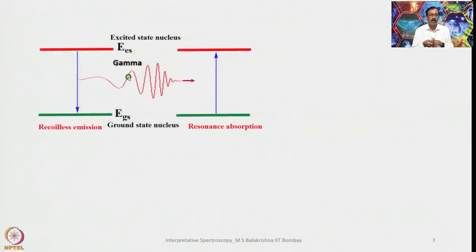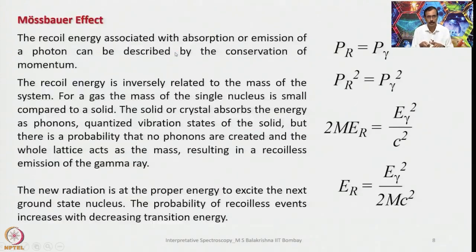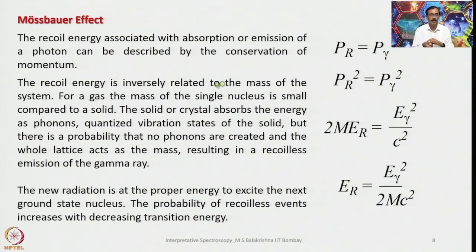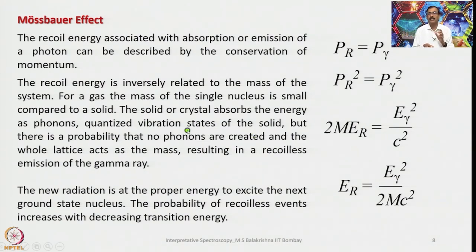This diagram shows a typical Mössbauer setup: recoil-free emission on the source side, resonance absorption on the absorber side, and gamma radiation connecting the ground state and excited state of the nucleus. The recoil energy associated with absorption or emission of a photon is described by conservation of momentum: p_R = p_γ. The recoil energy is inversely related to the mass of the system. For a gas, the mass of a single nucleus is small, but in a solid or crystal the energy is absorbed as phonons (quantized vibration states). There is a probability that no phonons are created, and the whole lattice acts as the mass, resulting in recoil-free emission of the gamma ray. The probability of recoil-free events increases with decreasing transition energy.